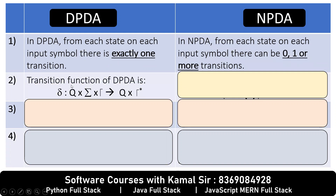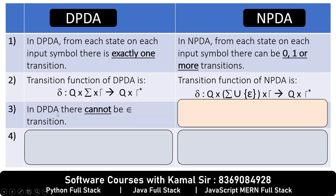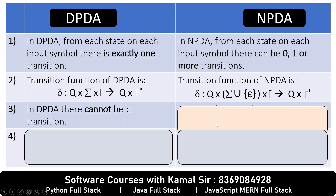Point number 2. The transition function of DPDA: given a state, the input, and the stack top, you can change the state and perform some stack operation. In DPDA, there cannot be an epsilon transition. In NPDA, there can be an epsilon transition.